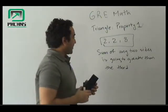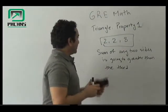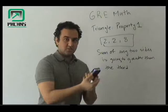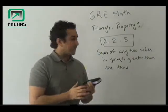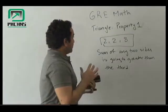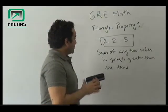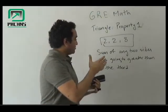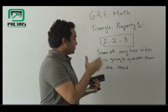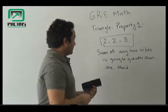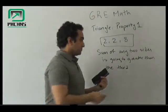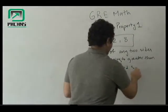Hello everyone, welcome to Peckins. This is the second part of the last video lecture we did. Property number one: the sum of any two sides should be greater than the third side.